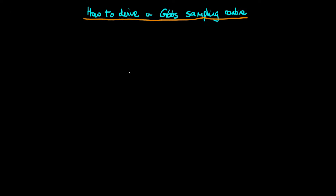In this video I want to talk about how to actually derive a Gibbs sampling routine for an arbitrary circumstance. The first step to deriving a Gibbs sampler is to write down the joint probability distribution. Gibbs sampling requires us to know the conditional probability distributions, and in this two-dimensional example we need to know the probability density of x given y and y given x. We find those using the conditional law of probability.